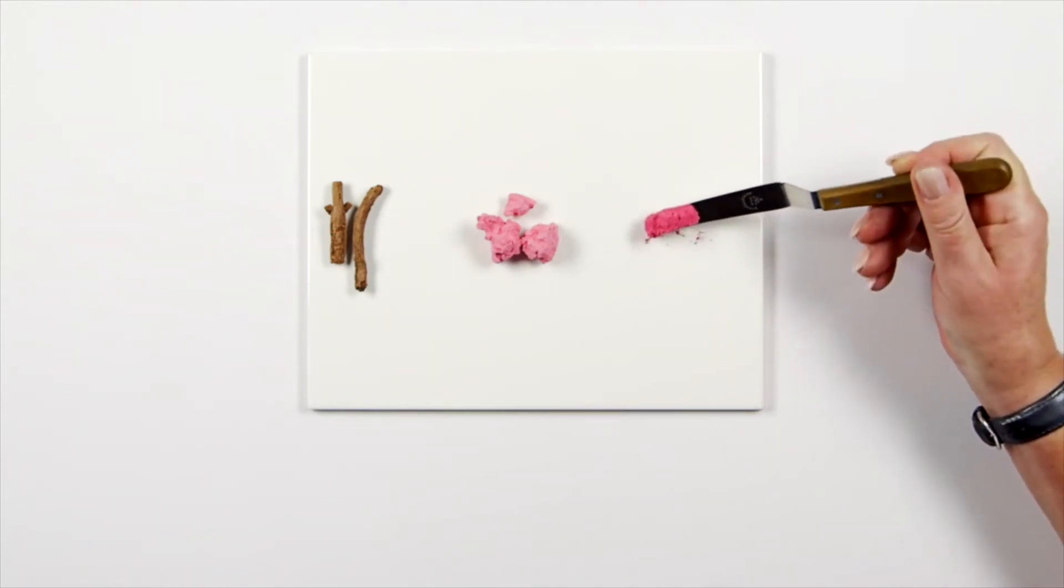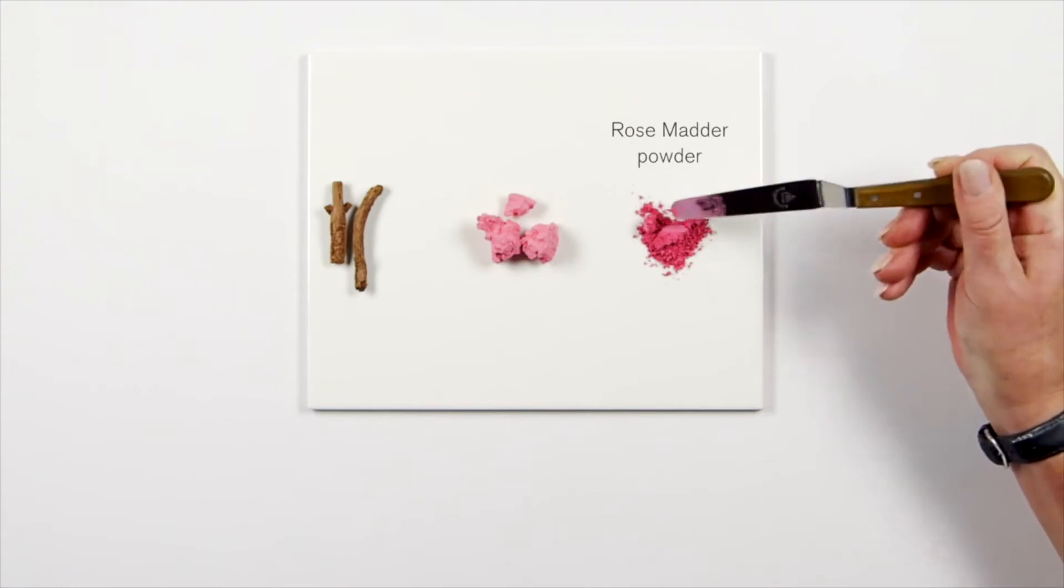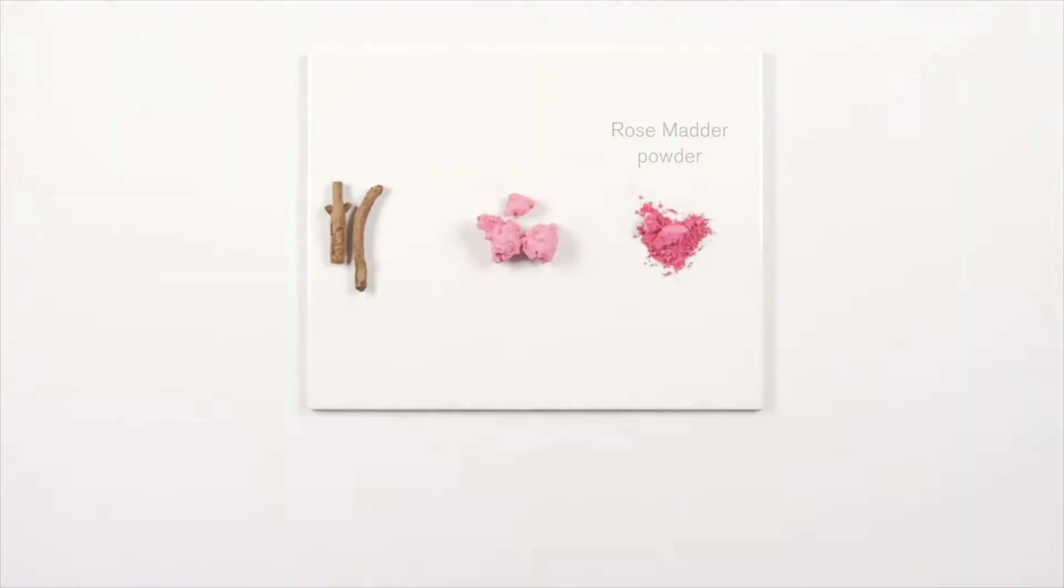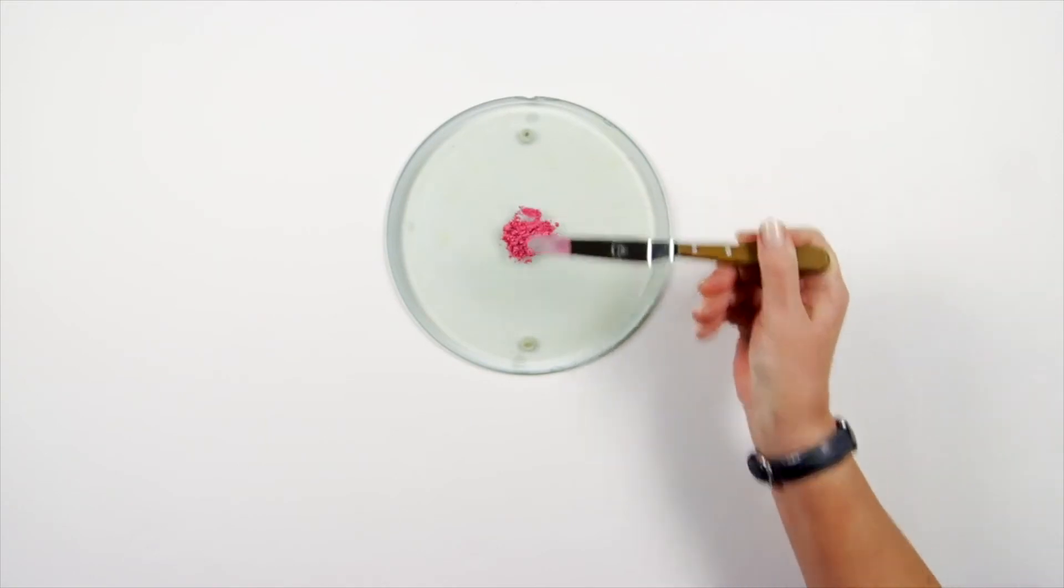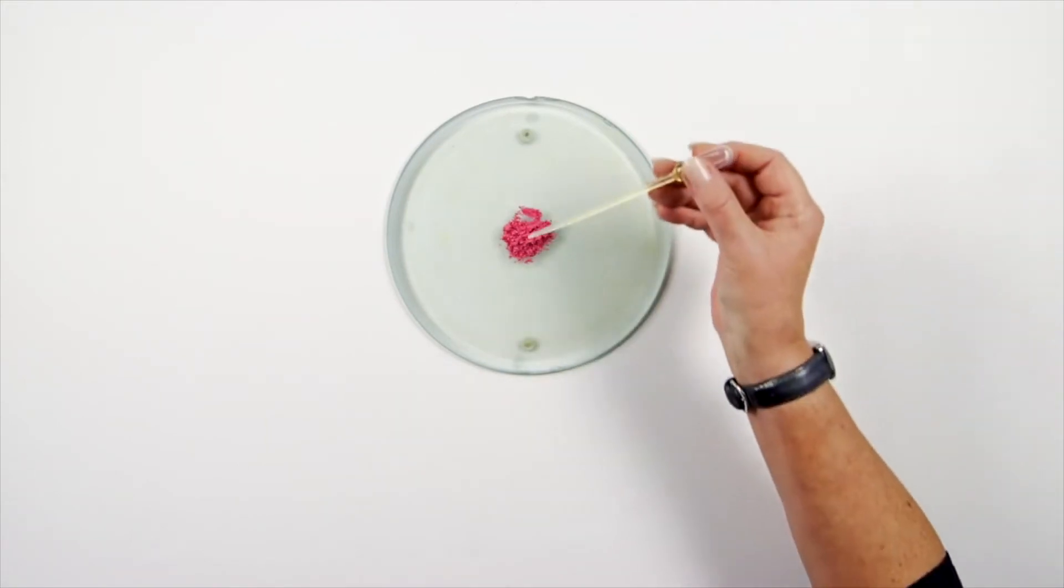This is then ground into a fine pigment powder. This pigment is then ground into a gum-arabic solution to form the beautiful colour we know as Rose Madder.